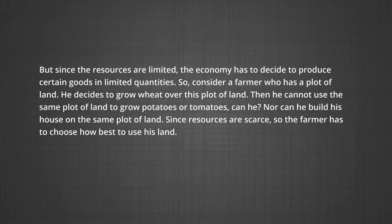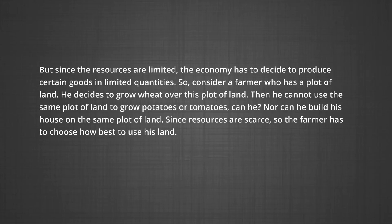Consider a farmer who has a plot of land. He decides to grow wheat on this plot of land. Then he cannot use the same plot of land to grow potatoes or tomatoes, nor can he build his house on the same plot of land. So since resources are scarce, the farmer has to choose how best to use his land. If all its resources are being used, a nation that wants to increase the production of one commodity can do so only by decreasing the production of some other commodity. This is known as the problem of allocation of resources.